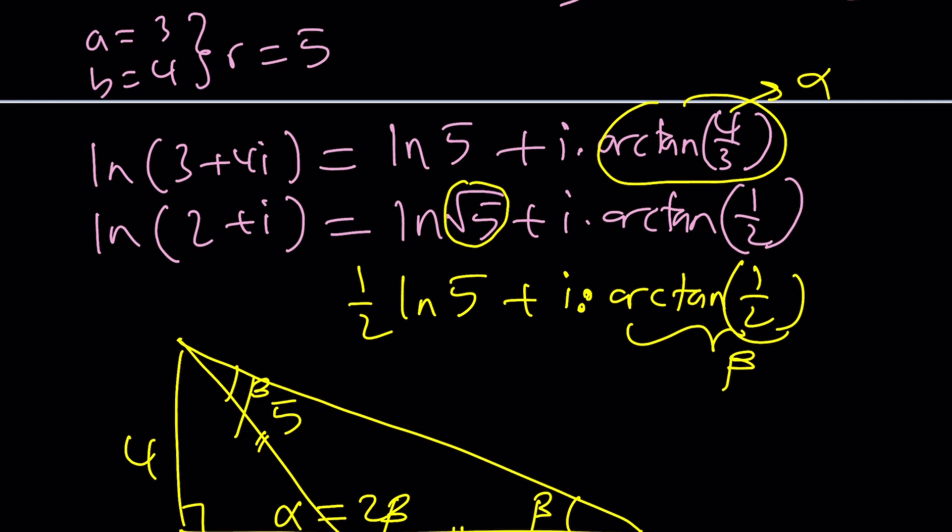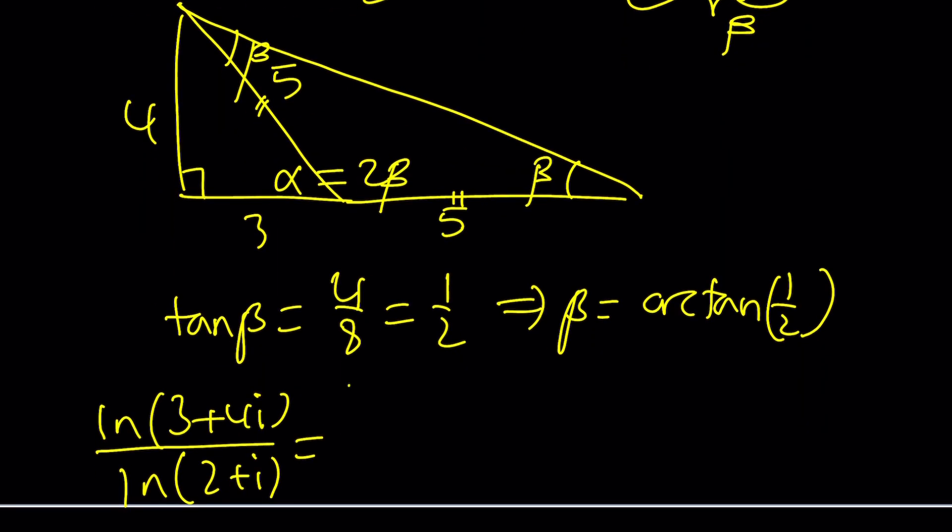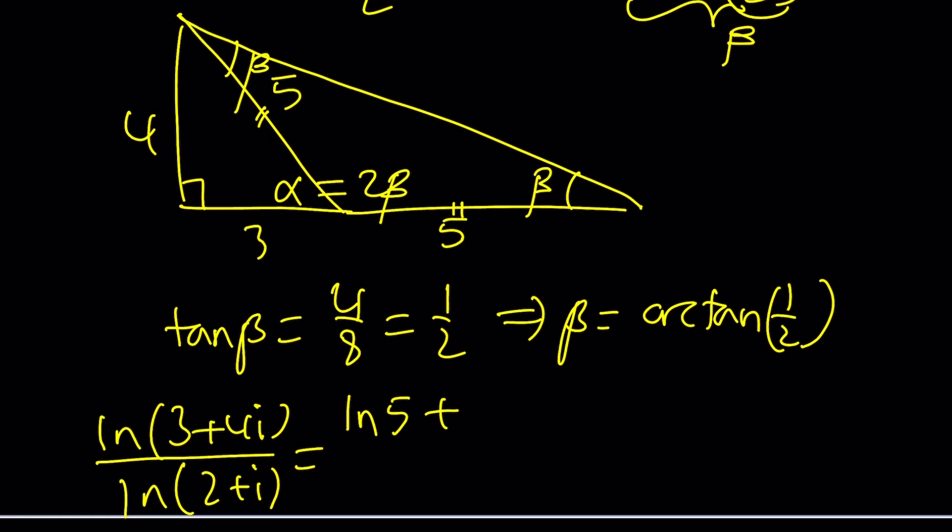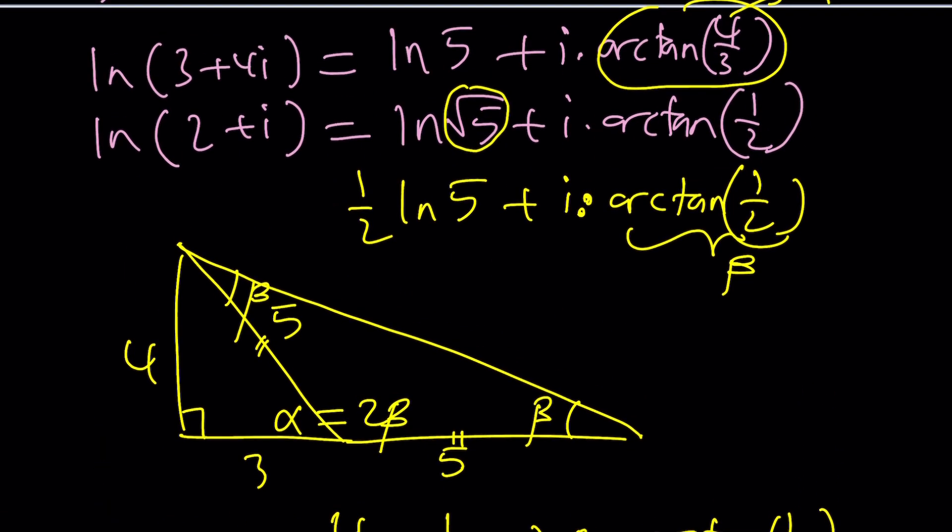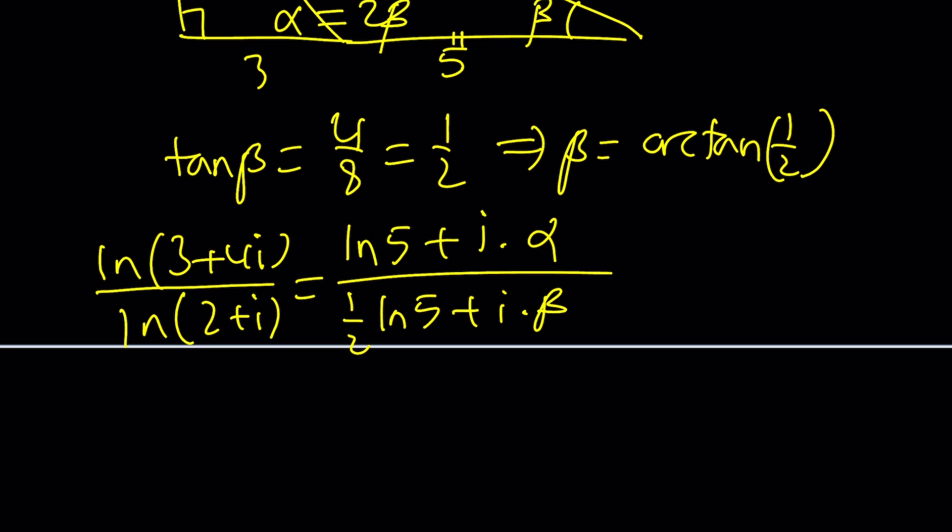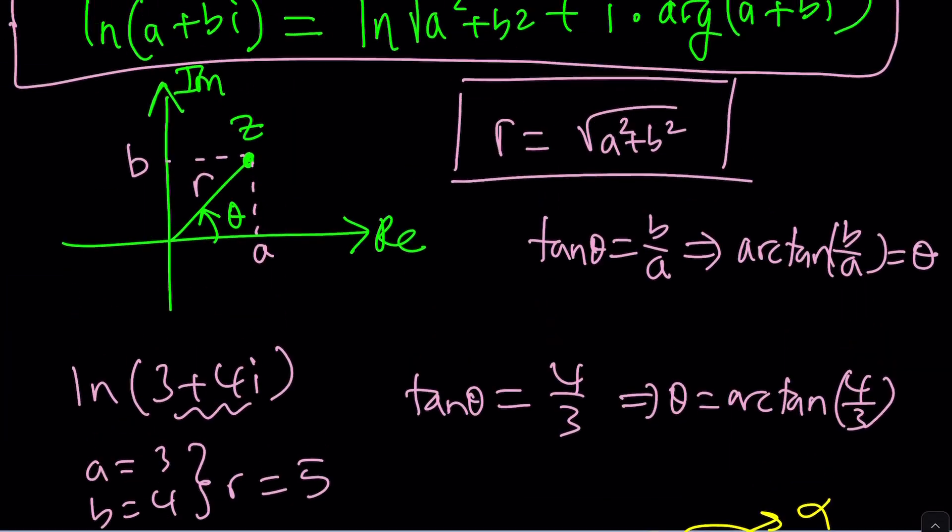So alpha is 2 beta. What does that mean? It means that I can replace alpha with 2 beta. So this is what I have. Let me rewrite the original expression. And now that gives me ln 5 plus i times alpha. And this is 1 half ln 5 plus i times beta. Are you ready for the hocus pocus? I'm about to replace alpha with 2 beta. Ta-da! Something interesting happens. Now I can go ahead and factor out a 2. And that gives me 1 half of ln 5 plus i times beta, divided by 1 half of ln 5 plus i times beta. And these two cancel out leaving us with 2. The answer is 2. But is that what we were looking for? Yes, absolutely.